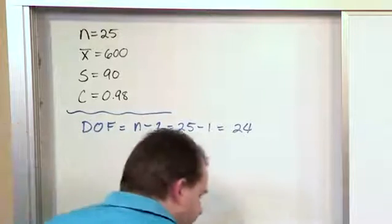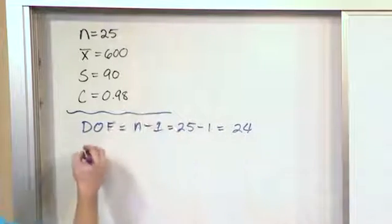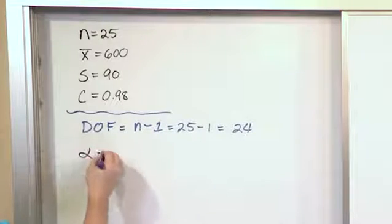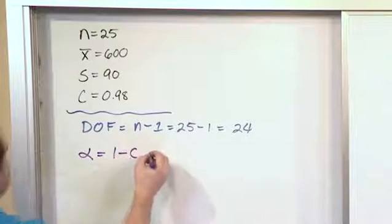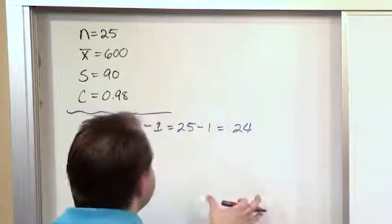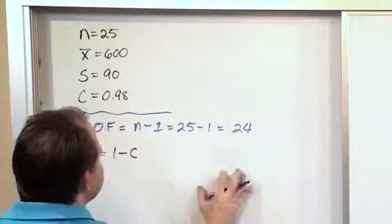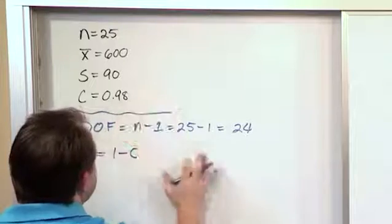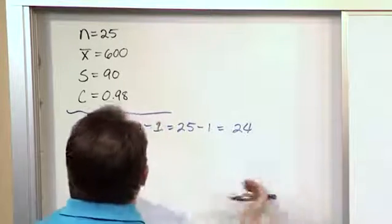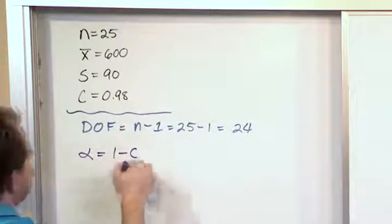Next, we'll switch colors. Next, we say that alpha is just 1 minus C, because remember, if you can picture the distribution here, the level of confidence is what's in the center there, in this case 0.98. The tails is what we denote here, 1 minus C.